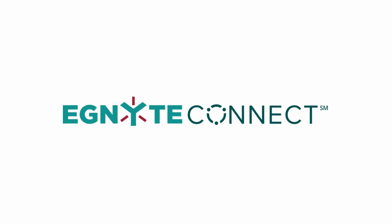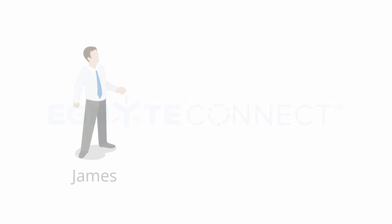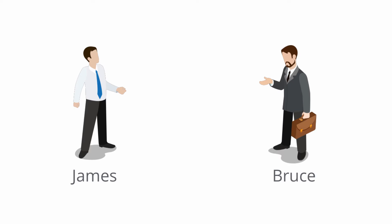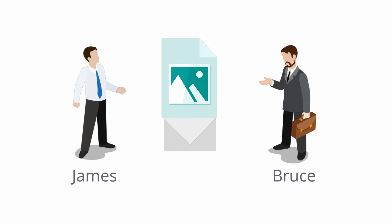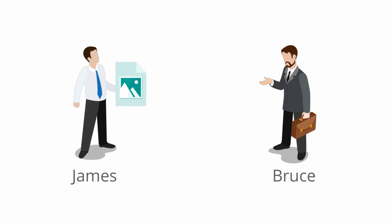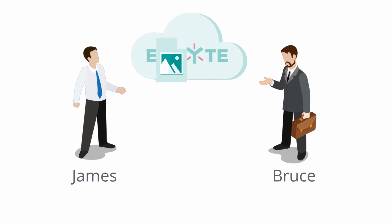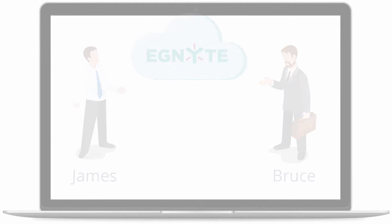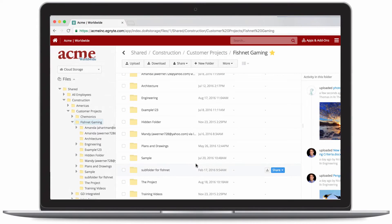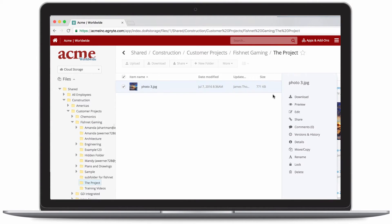Let's talk about how Ignite Connect works. James, a marketing director at Acme Inc., is working with Bruce, an outside vendor, on a new website for his company. James has a new image for Bruce to use on the website, but the file is too large for email. However, this is not a big deal because James has the image file saved to a project folder in Ignite. Bruce simply signs into Ignite Connect using the web interface, navigates to the project folder where James saved the file, and retrieves it. No emailing required.